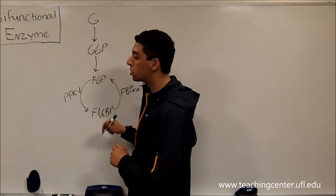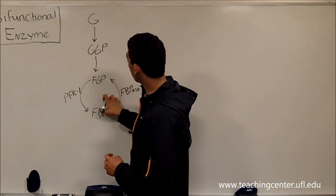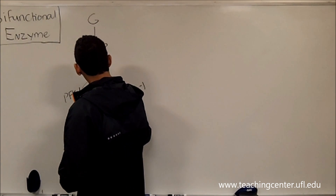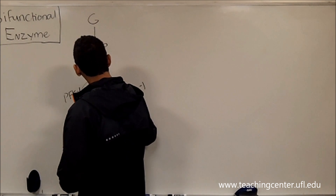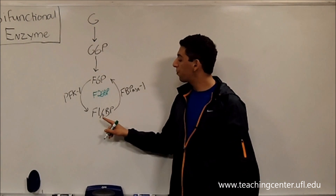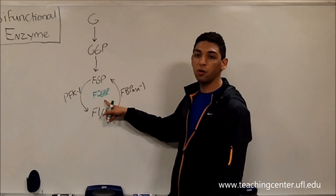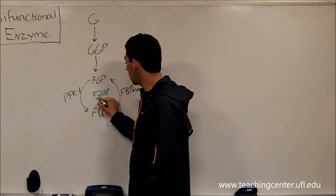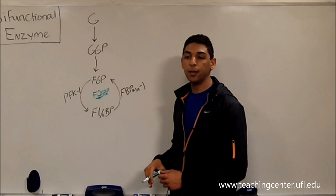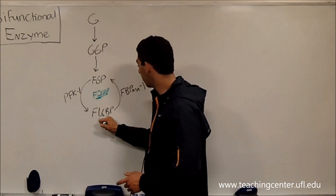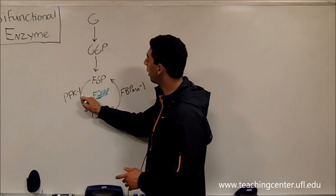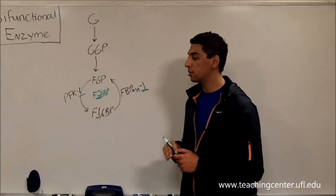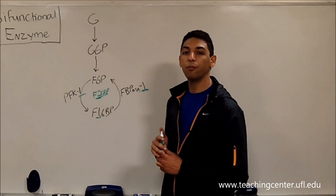So much so that we make a molecule whose sole purpose in life is to regulate this one step. That molecule is called fructose 2,6-bisphosphate. Notice the product is fructose 1,6-bisphosphate and the regulatory molecule is fructose 2,6-bisphosphate. All of the 2s end up being part of this regulatory pathway and all of the 1s end up being part of glycolysis or gluconeogenesis.